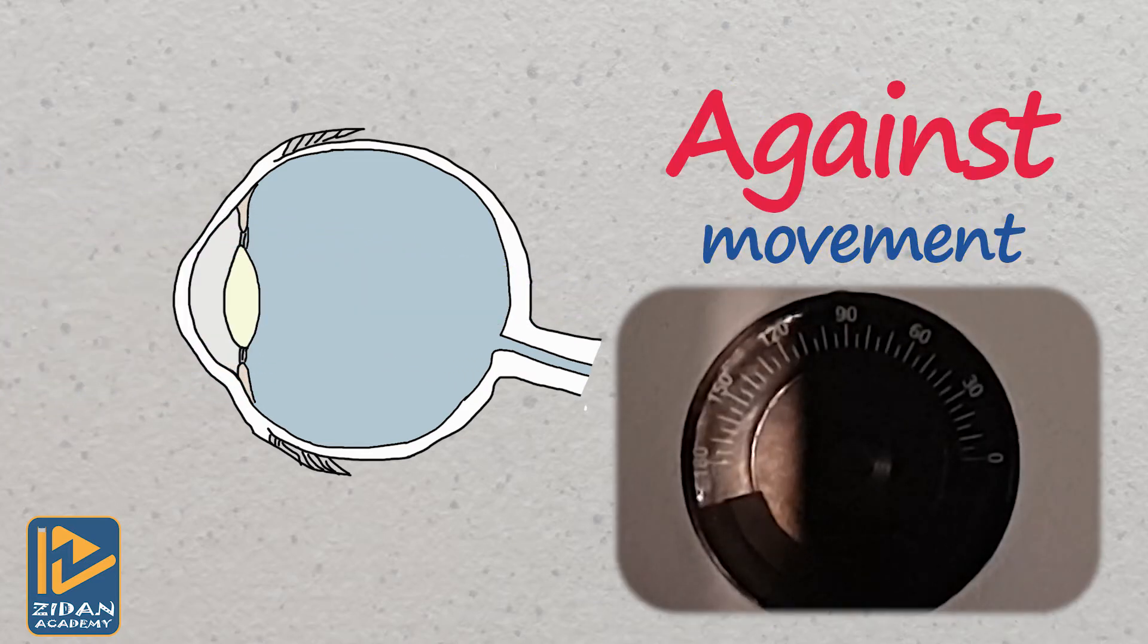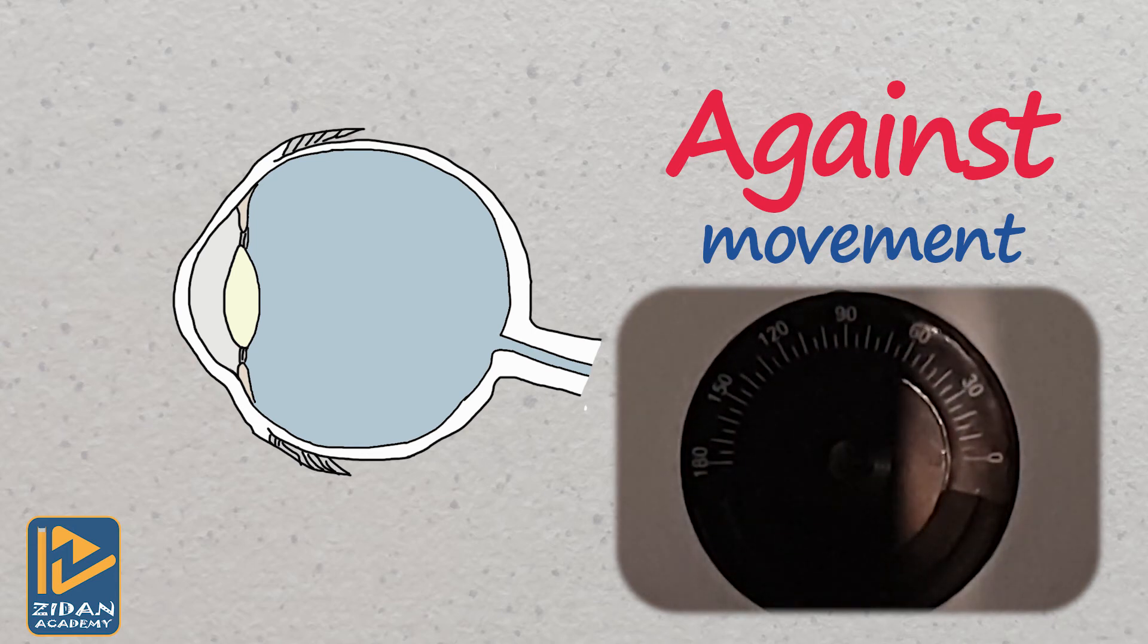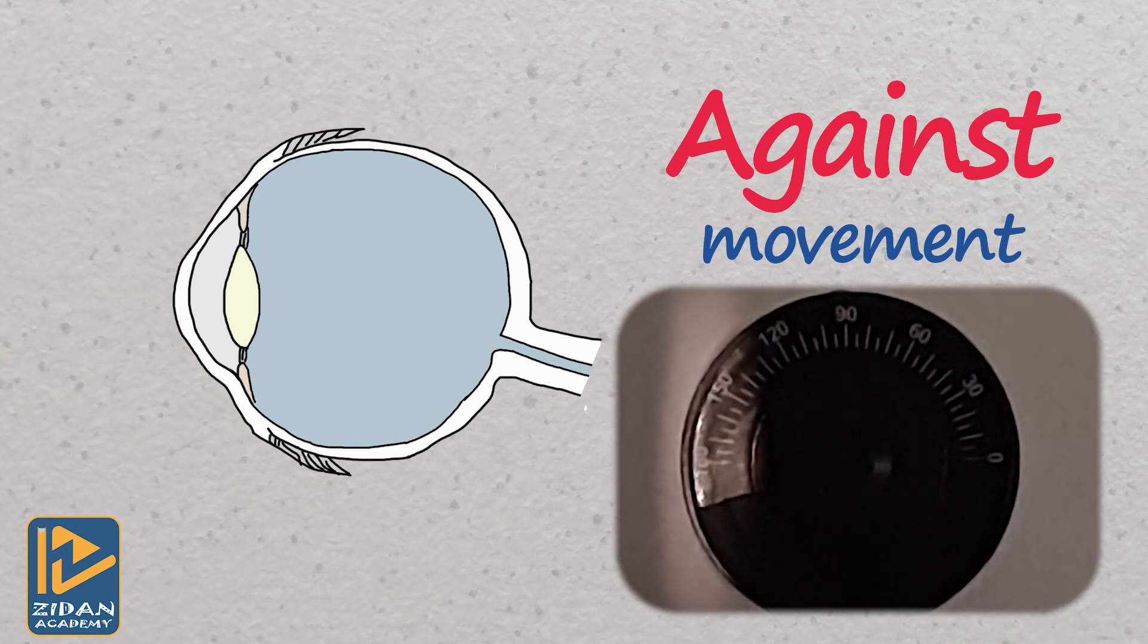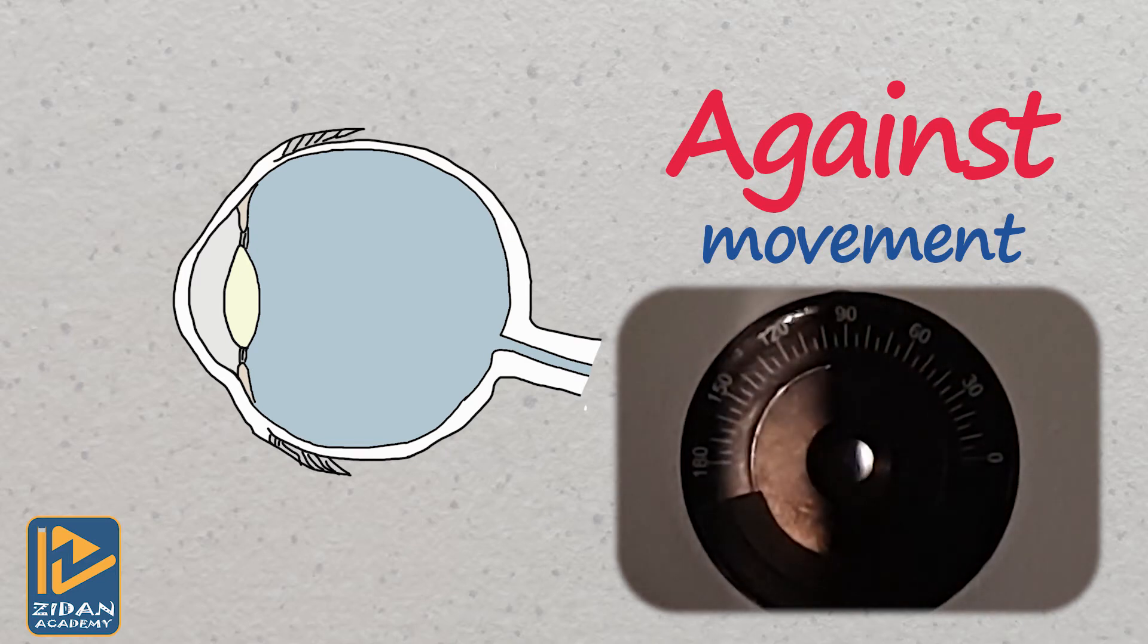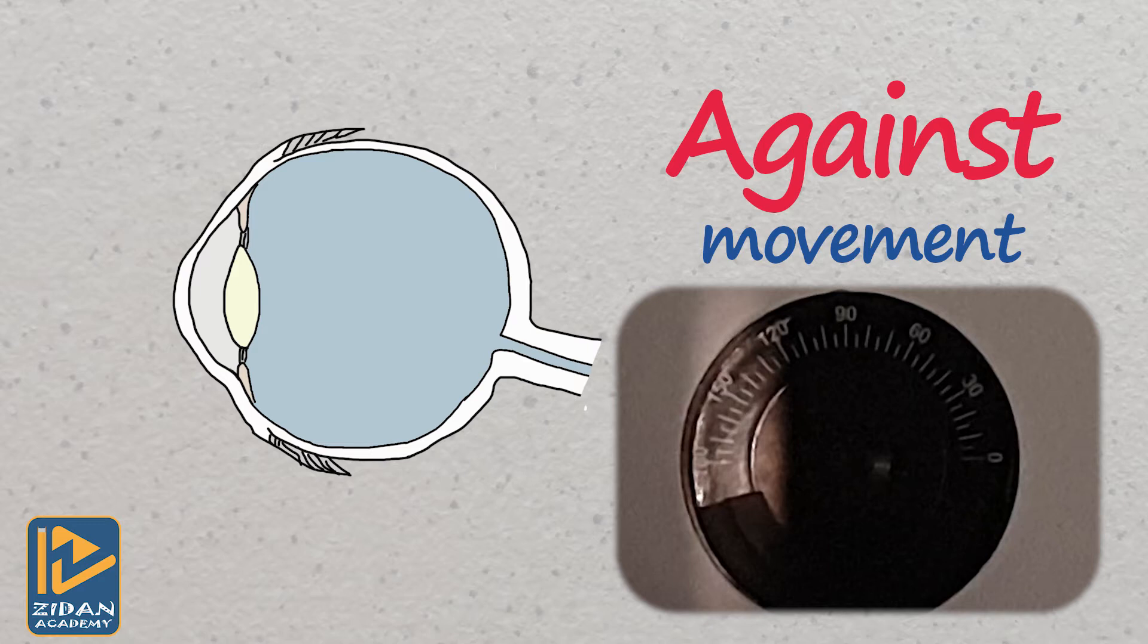Now let's move to against movement. Here is a real-time image again. Let's have a look at this diagram, but this time it's a strong short-sighted myopic eye, and the light entering the eye will be focused at a point in front of the retina.